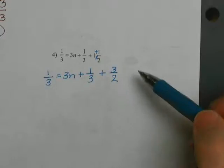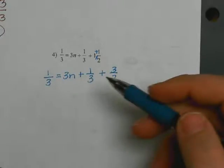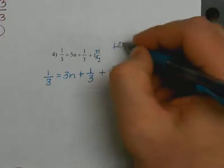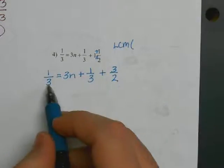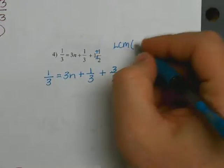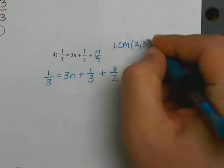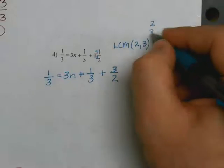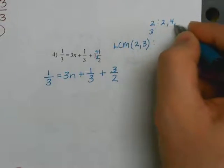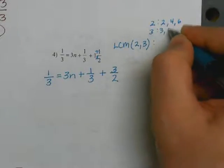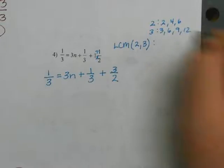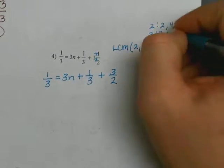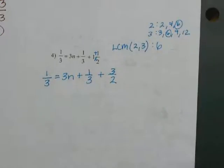I've converted all mixed numbers to improper fractions. There's no distributive property, so now I find the LCM of the denominators. The denominators are three and two, so I need to find the LCM of three and two. You list out the multiples: two, four, six — and three, six, nine, twelve — so the least common multiple of two and three is six.